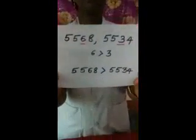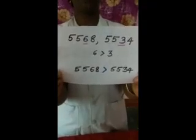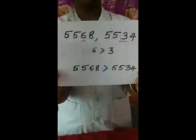Another example. See here: five thousand five hundred and sixty-eight and five thousand five hundred and thirty-four. In this example, both the thousands place and hundreds place are the same, but the tens place digits are six and three. We already know six is always greater than three. So the answer is five thousand five hundred and sixty-eight is greater than five thousand five hundred and thirty-four.